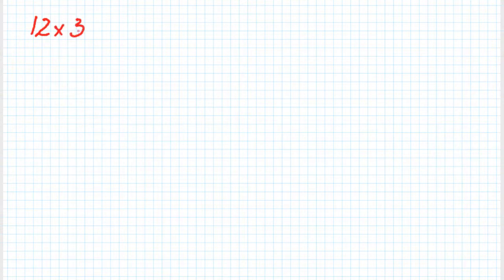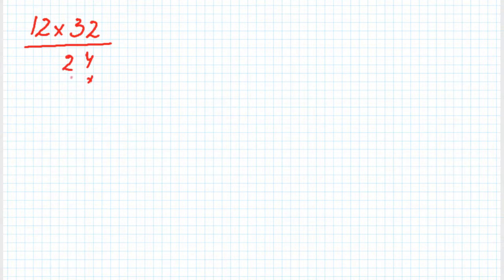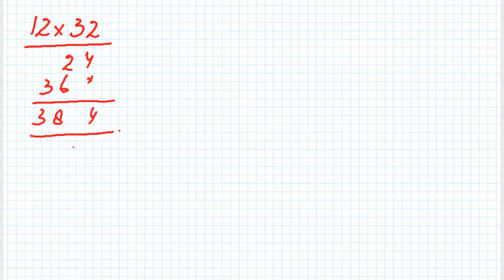Let's begin. First we shall take two two-digit numbers: 12 multiplied with 32. In order to multiply them, we can do 2×2=4, 2×1=2, 3×2=6, 3×1=3. The result we are getting is 384. But you would say this is just the usual multiplication method — show us a smarter way.